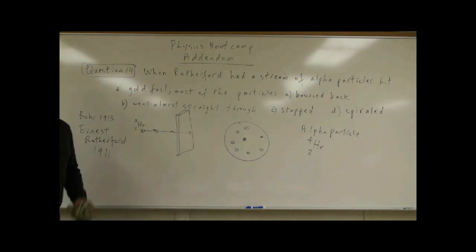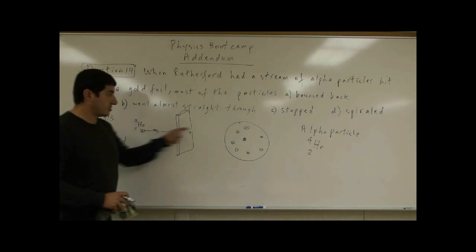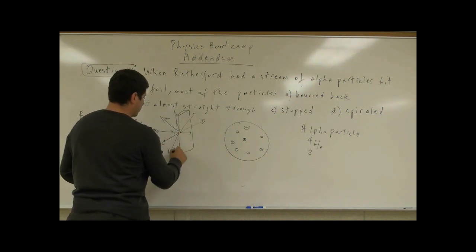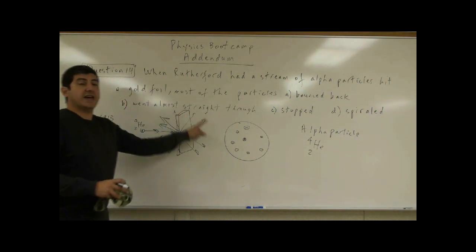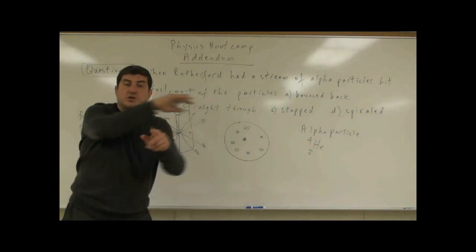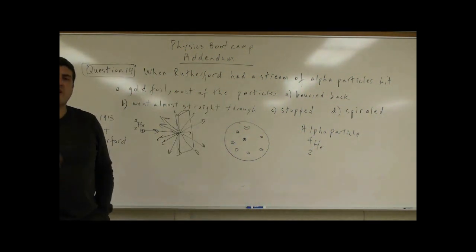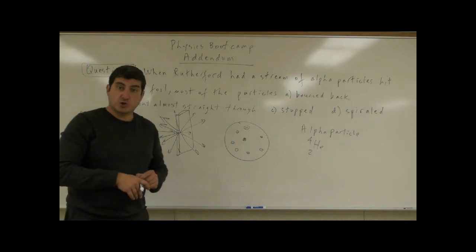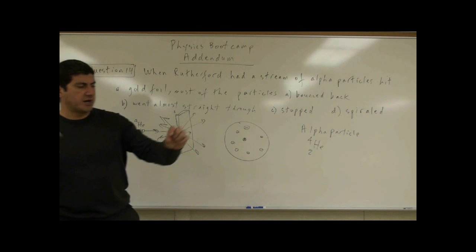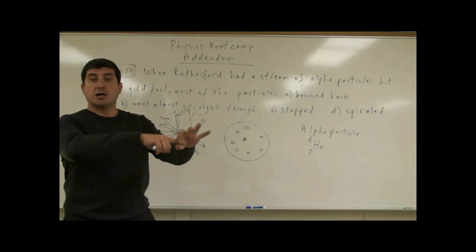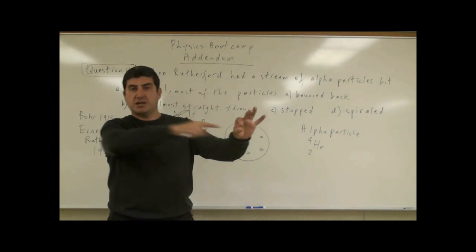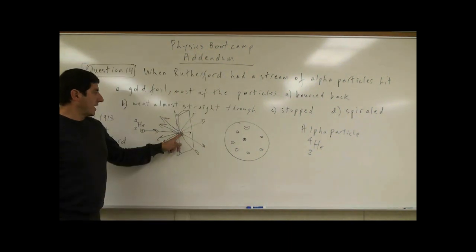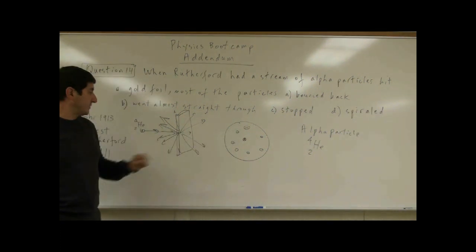The question was: what would happen? Would most of them bounce back, go straight through, or scatter randomly in all 360 directions? If they had scattered randomly in 360 degrees, that would have meant the pudding model was true — positive and negative charges everywhere, so the helium nuclei would bounce randomly depending on what they hit along their path.